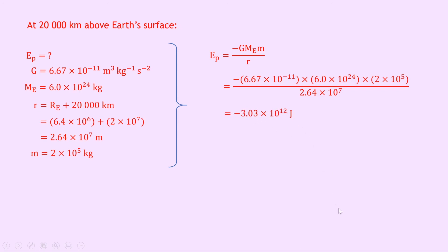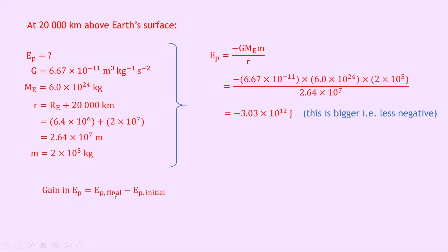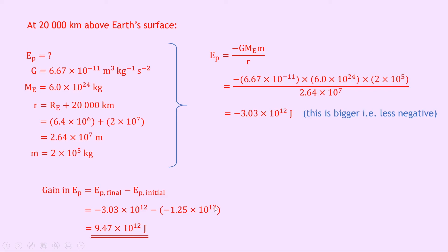We're not finished yet. Notice this value is bigger, i.e. less negative, than our first value. The gain in gravitational potential energy equals final potential energy minus initial potential energy: minus 3.03 times 10 to the 12, minus minus 1.25 times 10 to the 13. Notice the double negative becomes a positive, so we end up with 9.47 times 10 to the 12 joules — a positive answer because the surface value was more negative due to the larger power.